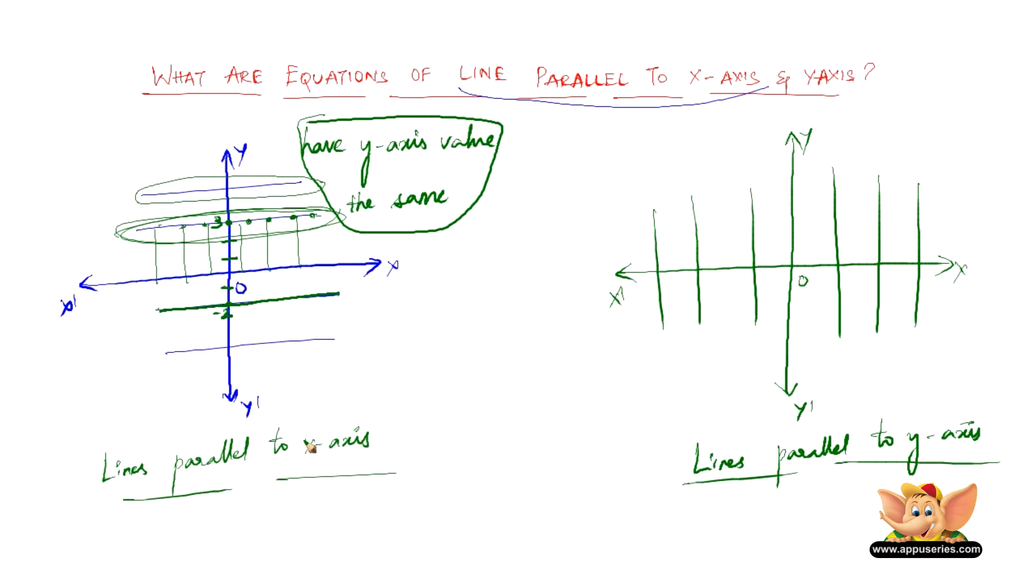Now coming to lines parallel to y-axis. If you see, the distance of this line from the y-axis is the same throughout. If you'd have drawn numbers here, the value would have been 2. So the x-coordinate value of this line throughout is the same - only the y changes.